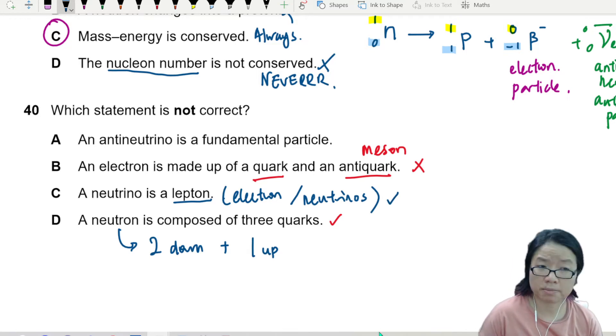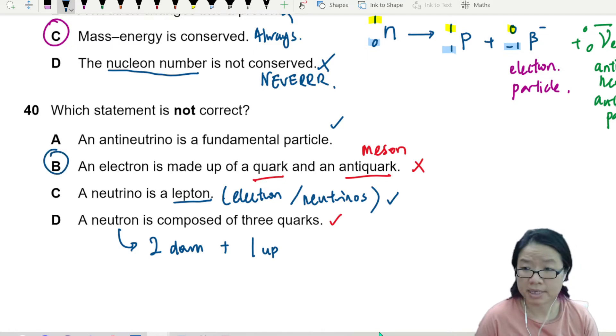Anti-neutrino is a fundamental particle. Yes, it is. So the answer is B, okay?